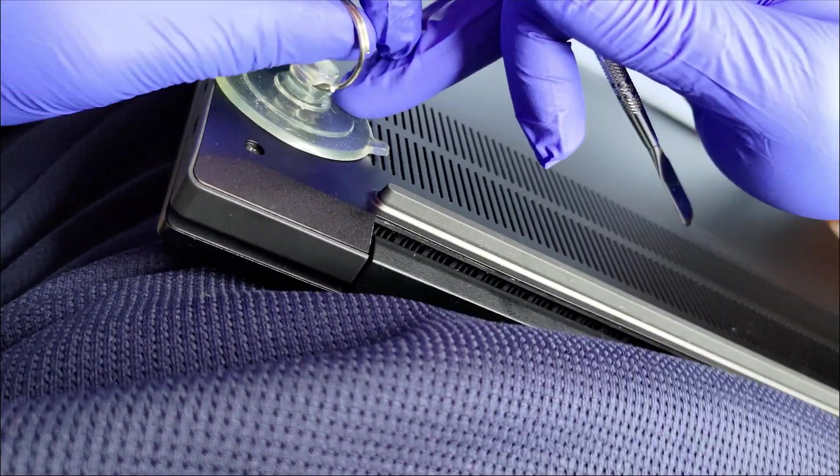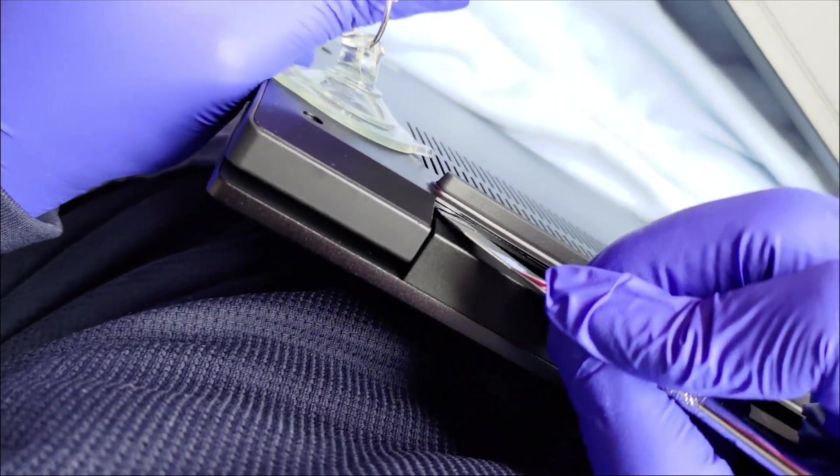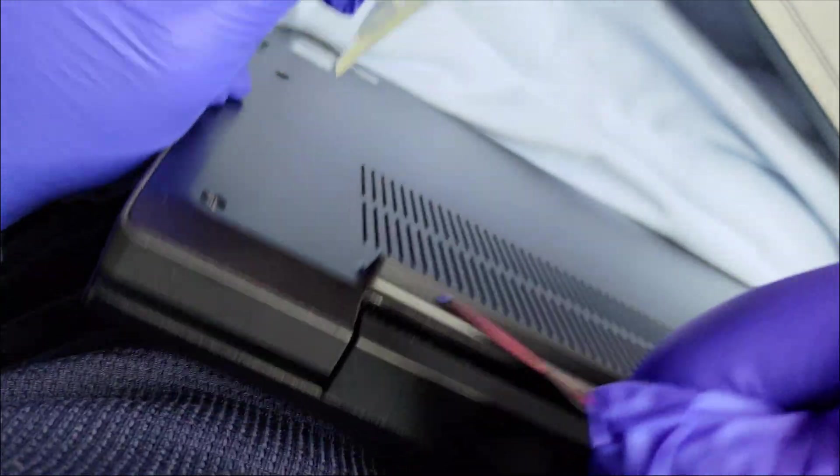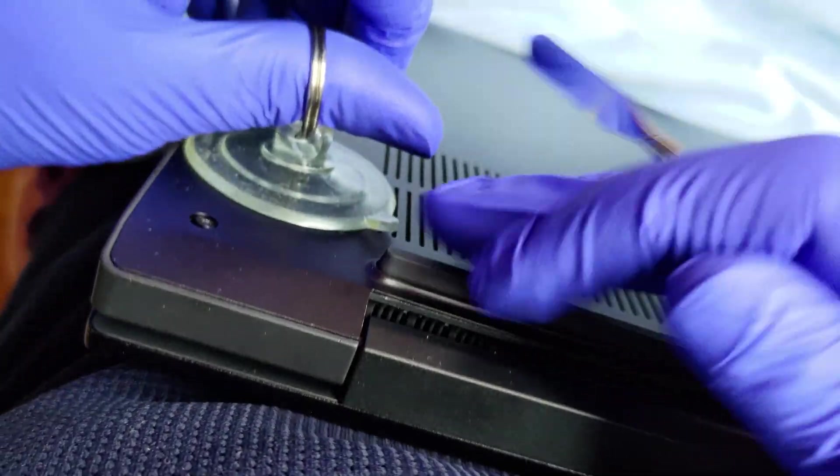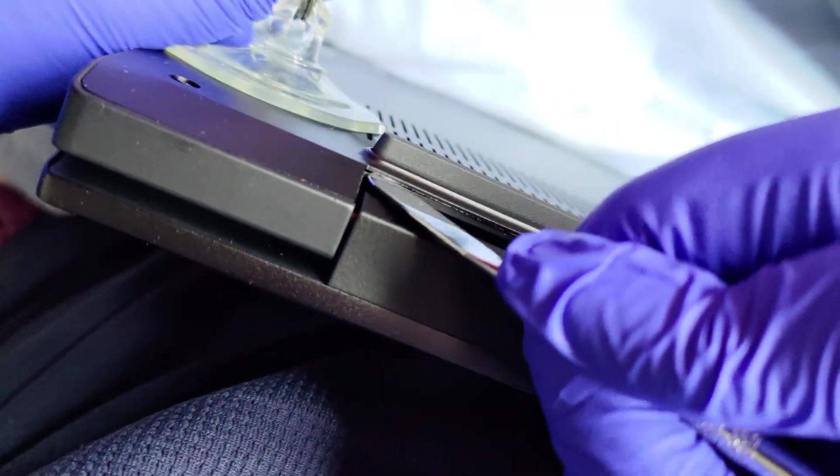A suction cup was required to pry the rear cover off the main case, enough to slip a metal spudger tool into the case and force the cover apart from the main body of the laptop. There are a lot of plastic clips holding this cover in place, and you definitely need a suction cup and a spudger to remove it.